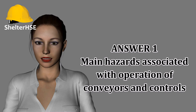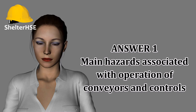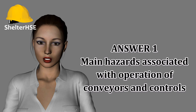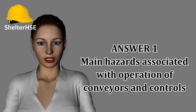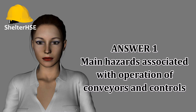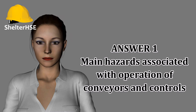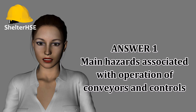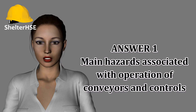Additional precautions include: information, instruction, and training for operators; controlling loose clothing and long hair, for example by the use of overalls and hair nets in the workplace; maintenance by authorized persons only to ensure safe running; and provision of a defect reporting system to highlight concerns.